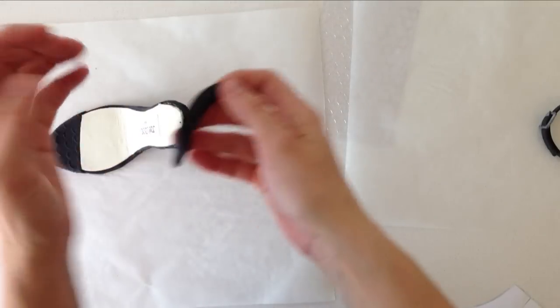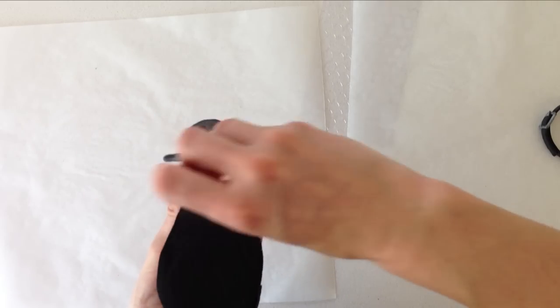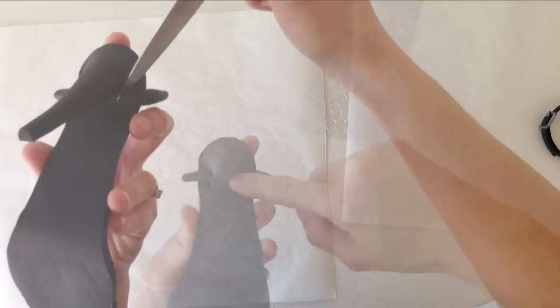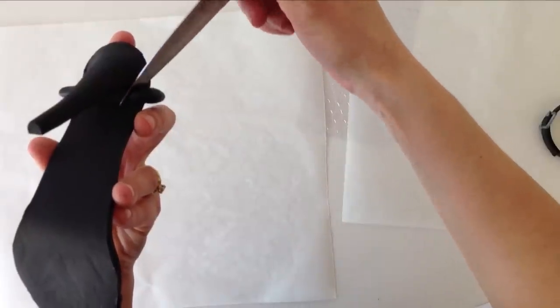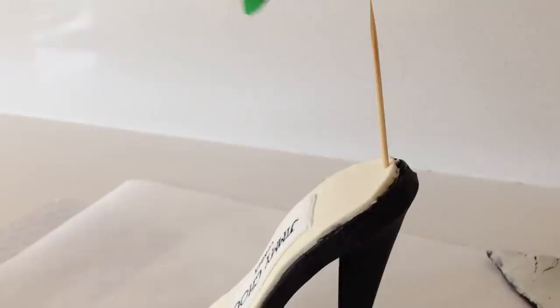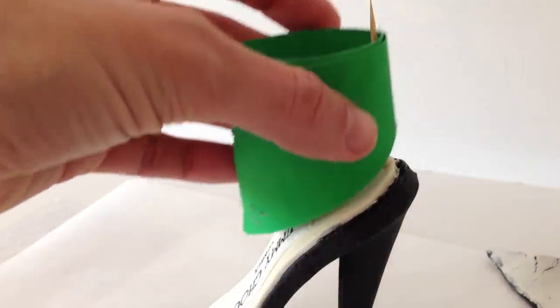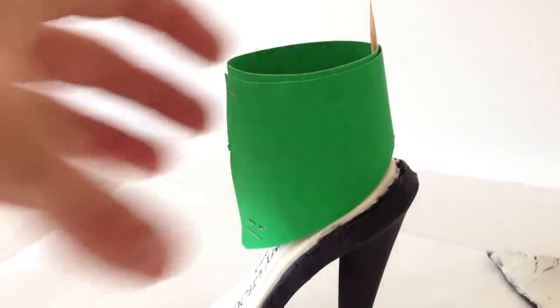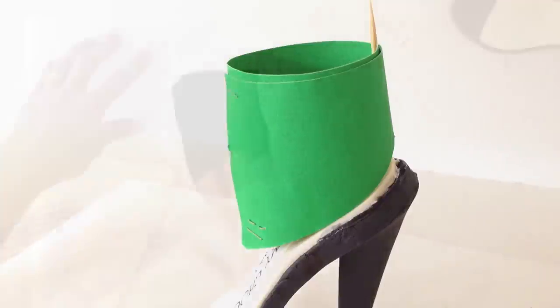Roll out a snake out of black fondant and add it to the underside of the shoe where the heel joins the sole and smooth it around, then trim off the excess. Take a toothpick and poke it into the shoe on almost an upright angle and then sit the cardboard support over the top.